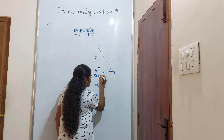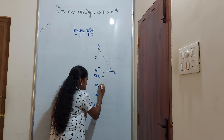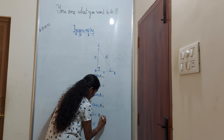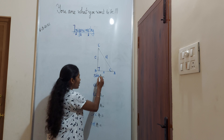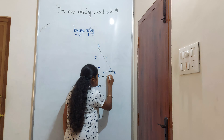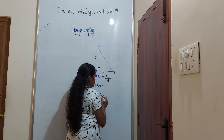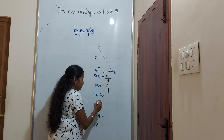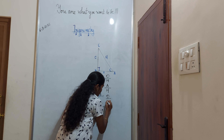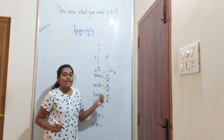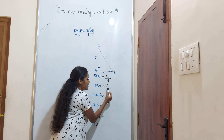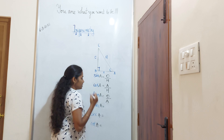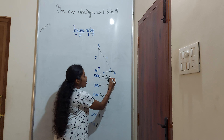Now let us write the various trigonometric ratios which we have seen in the previous classes. First is sine A, cos A, tan A, cosecant A, secant A, and cot A. What is sine A? It is opposite by hypotenuse. I told you a shortcut for this: 'Old Hardy and his old aunt.' Now tell me what is sine A? It is opposite by hypotenuse.